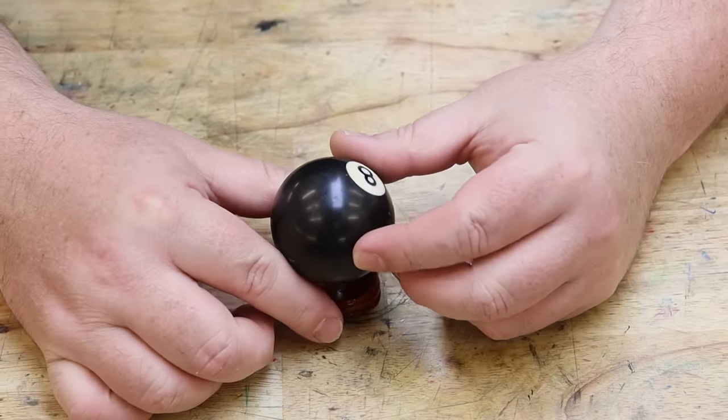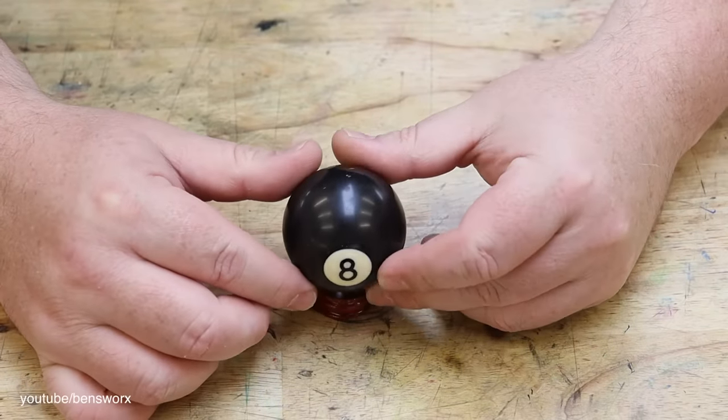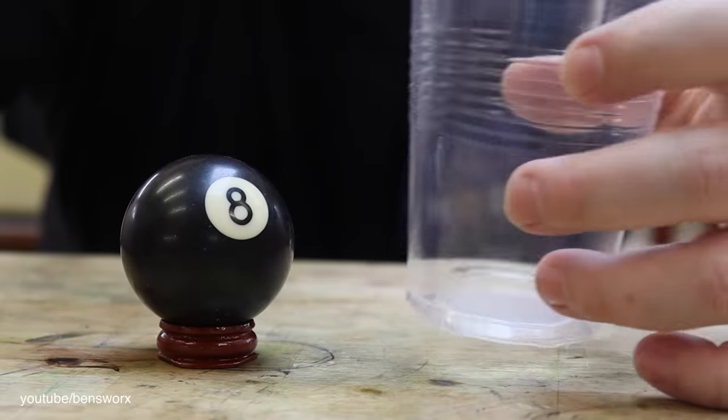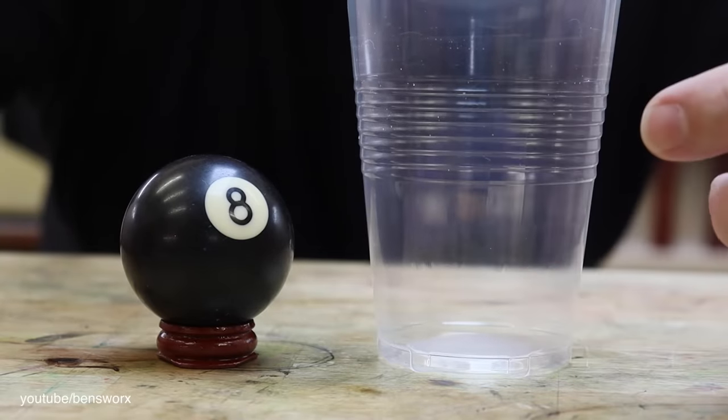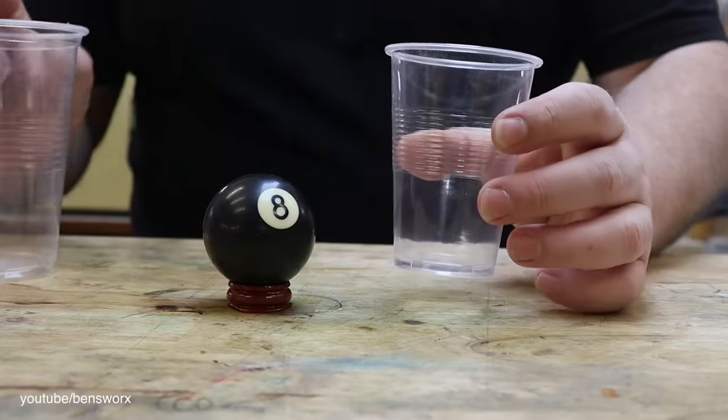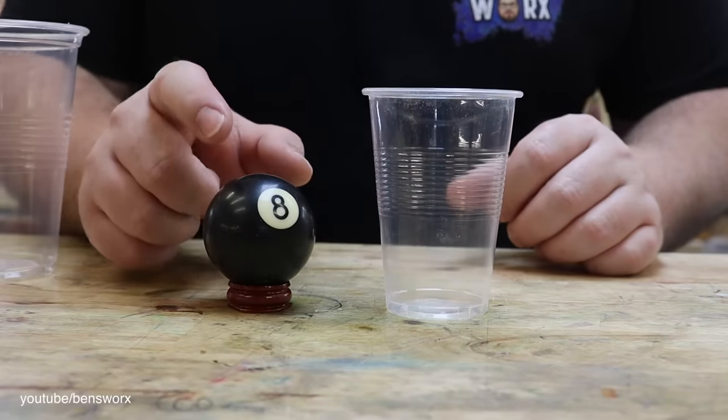So this 8 ball is a real 8 ball. I borrowed it off my mate so I could use it to get all the dimensions. Now this project should be fairly simple. The first thing I need to do is pour some black resin so I can turn the ball. Once that's done I'll pour myself some white resin and that'll create our insert.